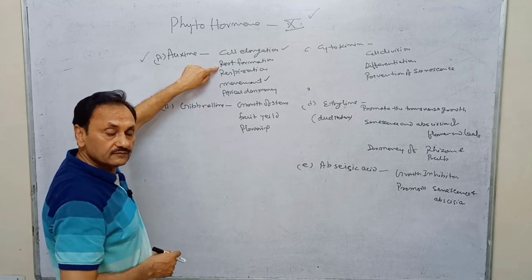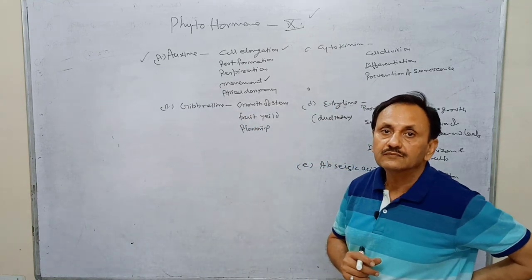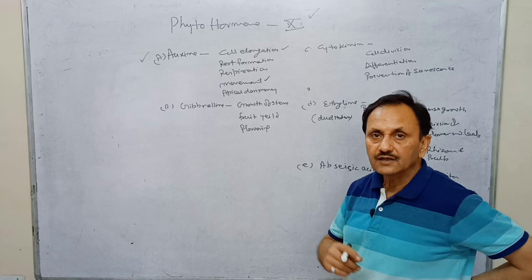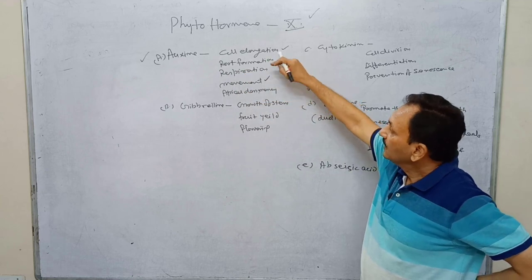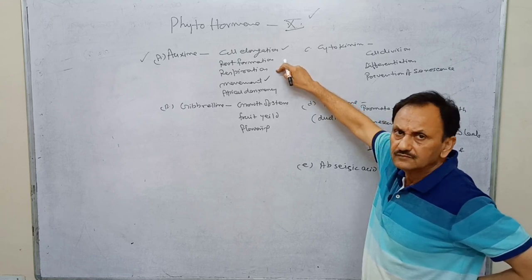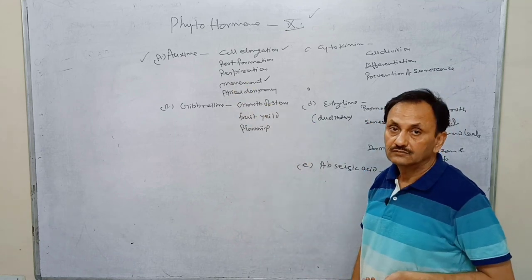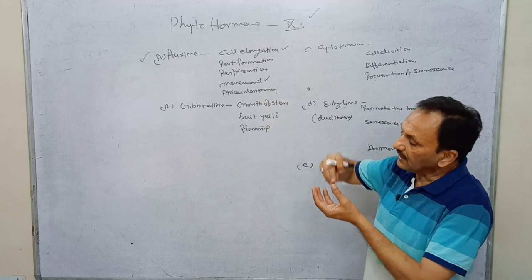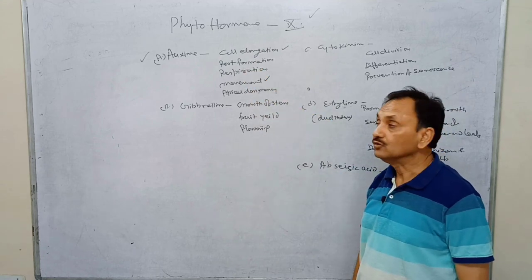Auxin is also responsible for root formation. During totipotency or tissue culture, when plantlets and masses of cells are formed from single cells, increased auxin quantity promotes root formation. Respiration and branching of plants are also under the control of auxin, through apical dominance — apical buds are suppressed and lateral branches grow due to auxin.